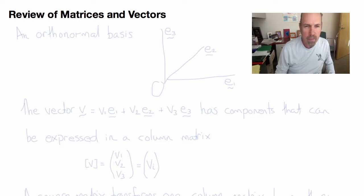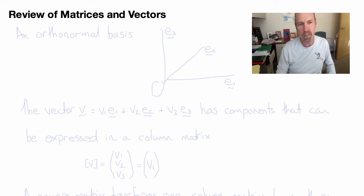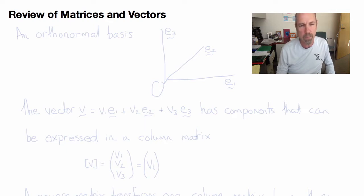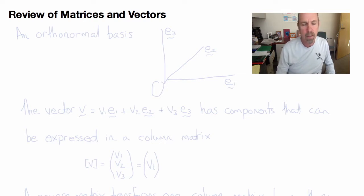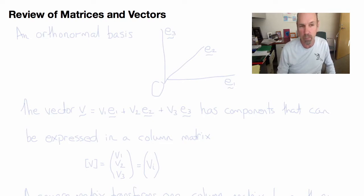A vector is a physical quantity, so a column matrix can represent the components of that vector, provided we specify a particular frame of reference, a particular coordinate system. If we choose a different coordinate system, since the vector is a physical quantity, it will have different components, because changing the frame of reference or changing the observer can't affect the physical quantity — it must therefore affect the components.